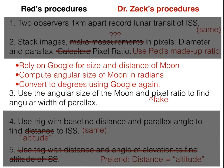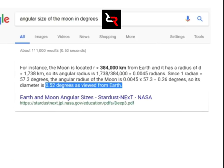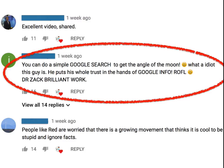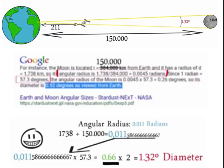Your accusation is that Red is just using Google instead of measuring. And looking at Red's video, it does look like he is using Google — he says 'you can do a simple Google search to get the angle of the moon' with a smiley face. You made a snarky remark: 'This guy puts his whole trust in the hands of Google info.' Looks like you got him there. But not so fast — we can actually see the moon. The angular size of the moon is observable from viewers standing on earth, which means it's measurable.